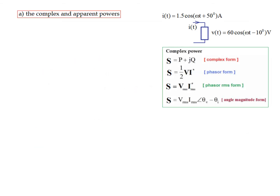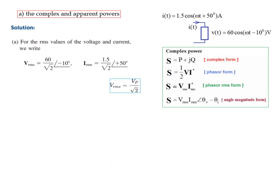For complex and apparent power, the given values are in peak form — V maximum and I maximum — so first we have to convert them into RMS values. To convert peak to RMS we divide by √2, keeping the angle. So 60 divided by √2 at angle −10°, and 1.5 divided by √2 at angle +50°.